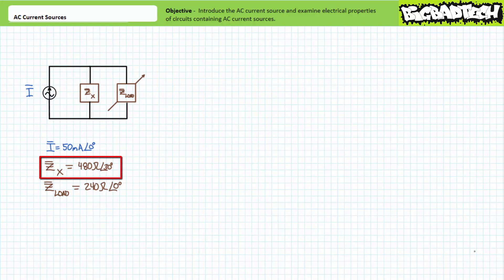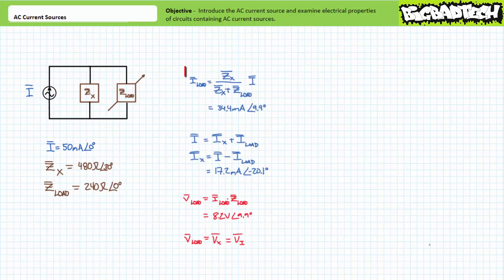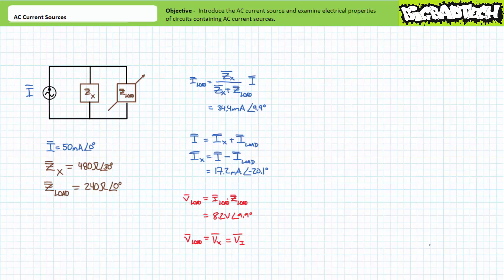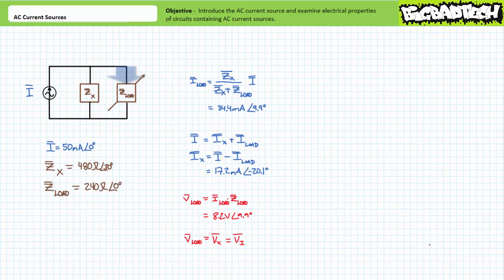One is a fixed impedance of 480 ohms at an angle of 30 degrees; another is a variable impedance currently set at 240 ohms at an angle of zero degrees. An application of the AC current divider rule demonstrates that current through the variable load impedance is 34.4 milliamps at an angle of 9.9 degrees. Kirchhoff's current law then demonstrates that the remaining 17.2 milliamps at an angle of negative 20.1 degrees is traveling through the fixed impedance. Current with a larger magnitude travels through the smaller magnitude variable load impedance, and current with a smaller magnitude travels through the larger magnitude fixed impedance. Accounting for phase shift, the summation of both outgoing current paths equals the incoming current, so we can be reasonably certain our results are correct.